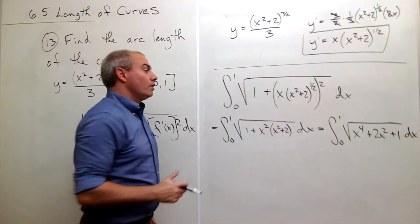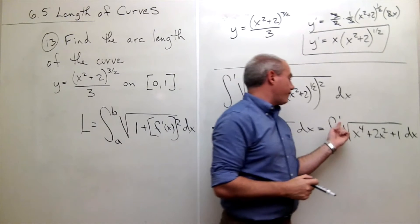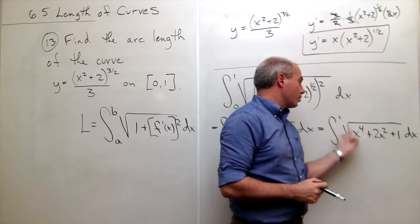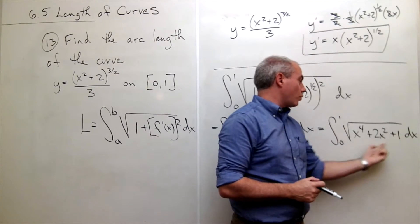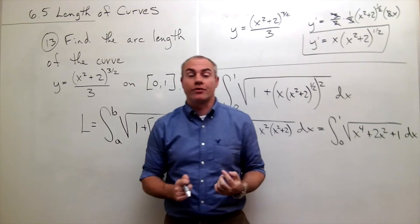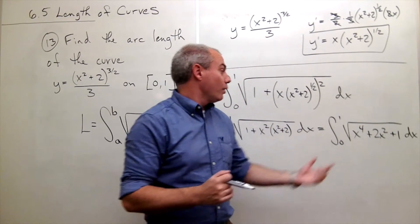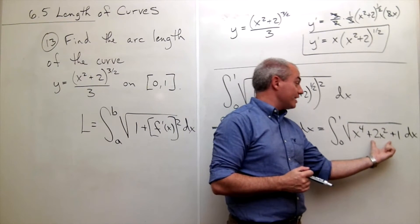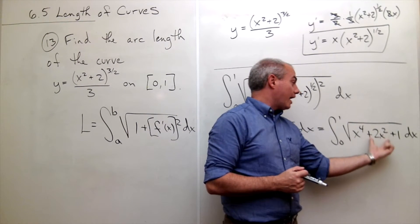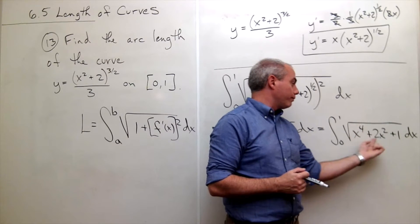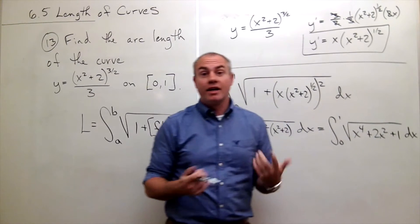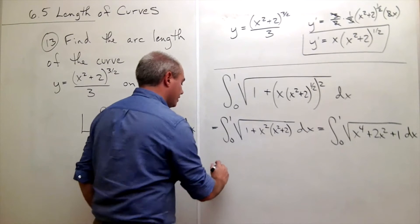Now, what would be really great is if I could take the square root of something here. So if this thing were a perfect square that's inside the square root, then I could take the square root of that square. Well, it just so happens that this thing is a perfect square. I can factor x to the 4th plus 2x squared plus 1, and it gives me something very nice. Let's do it.